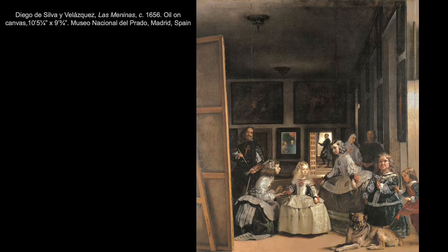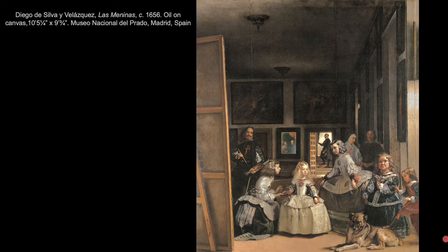Diego Velázquez's Las Meninas from about 1656 is a huge painting. He has included a self-portrait of himself holding a palette and paintbrush, working on a very large-scale canvas of a scale similar to Las Meninas itself — potentially indicating he was busy working on this for a prestigious patron. Velázquez was first painter to a powerful Spanish king, a very prestigious position, which is potentially part of why he included his self-portrait here.